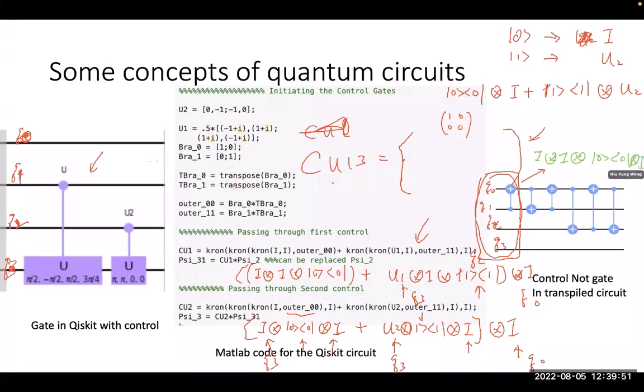And then? And plus I tensor product of the matrix of the control not gate. The matrix of the not gate. Not control not gate. Sorry, not gate. Actually this one, you can become just I tensor product, I tensor product of the control not gate. You should get the same thing for this simple example. I see.